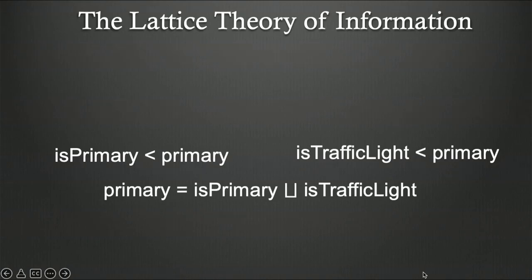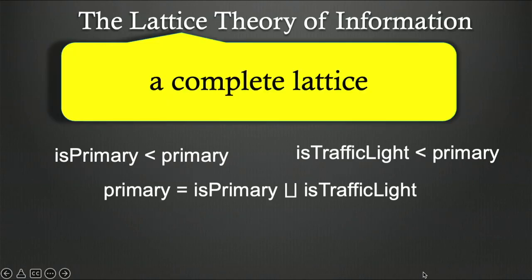Finally, the final ingredient to fill in this title is that we could notice that the function primary has more information than is primary, and it also has more information than is traffic light. And in fact, it is the smallest function which bounds both of those. In other words, it's the least upper bound. And in fact, for any set of information elements, including the infinite ones and the empty ones, there is a least upper bound for that. In other words, it's a complete lattice. So, this was the idea at the core of Shannon's idea that, by and large, disappeared from the literature.